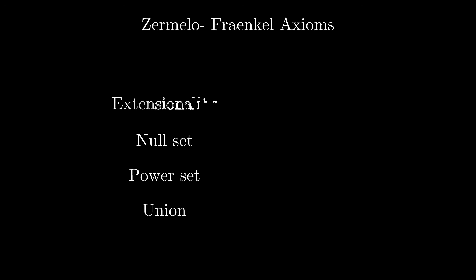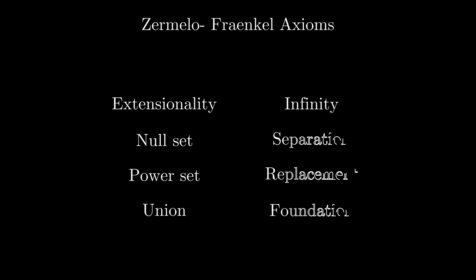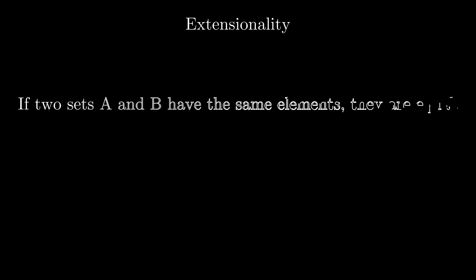The particular set of axioms that we accept nowadays bears the name of Zermelo-Fraenkel. Most of them sound reasonable and intuitive. Take extensionality: if two sets A and B have the same elements, then they are equal. Or the axiom which declares the existence of an empty set — there exists a set, denoted by Φ, called the empty set, which has no elements.